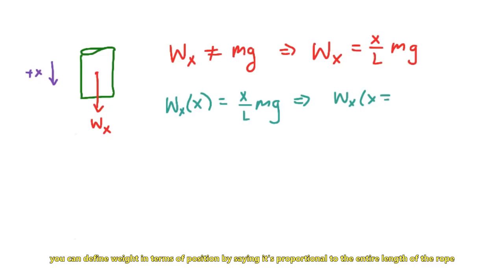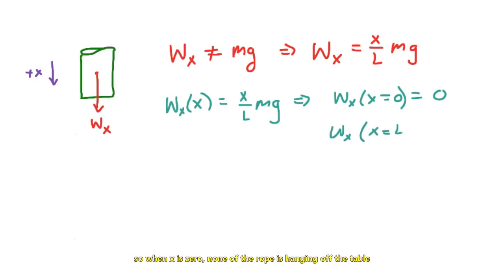You can define weight in terms of position by saying it's proportional to the entire length of the rope. So when X is 0, none of the rope is hanging off the table. When X is the length of the rope, the entire rope is hanging off the table, and so forth.